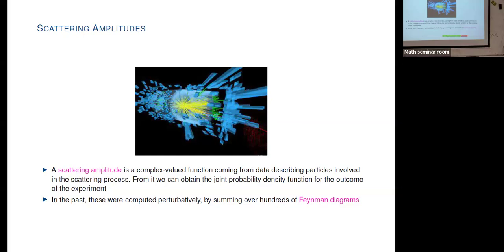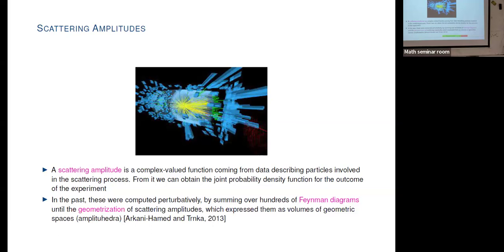This was the best we could do until 2013, when two physicists introduced the amplituhedron, which I'll talk about on the next slide. This expressed the scattering amplitudes as volumes of the amplituhedron, which are geometric spaces. If we're able to describe an amplituhedron, then this reduces those hundred-page computations to something much simpler. There is indeed a relation: Feynman diagrams are similar to classic graphs, and the amplituhedron is defined from the Grassmannian.